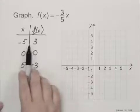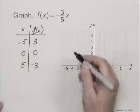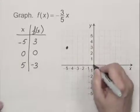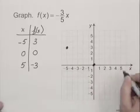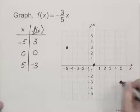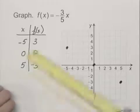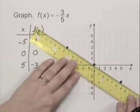So we plot the points negative five three, zero zero, and five negative three. They appear to line up on a straight line. When we put our straight edge up we see they do.